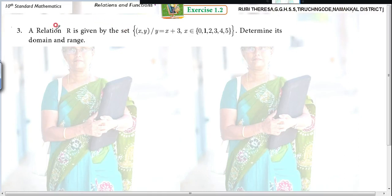A relation R is given by the set (x, y) such that y equals x plus 3, where x is an element from the set containing 0, 1, 2, 3, 4, and 5.